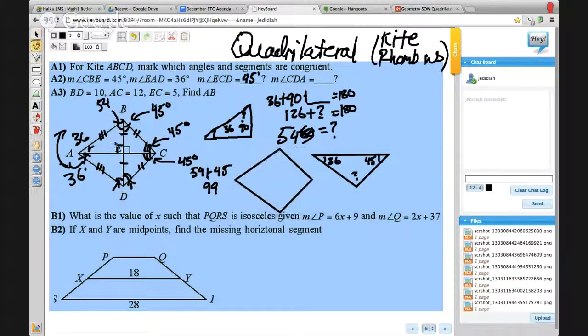Okay. And then it says BD equals 10. So this whole thing all the way across is 10. So each half would be 5 because it was split into two equal pieces there. And then AC equals 12. So the whole thing here is 12.